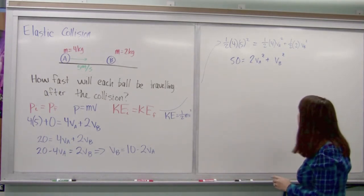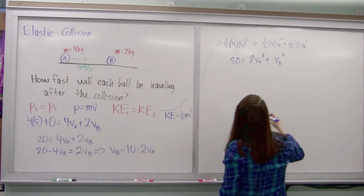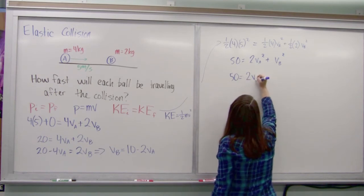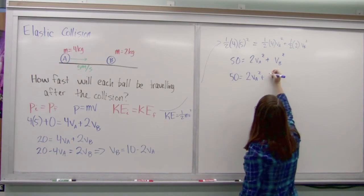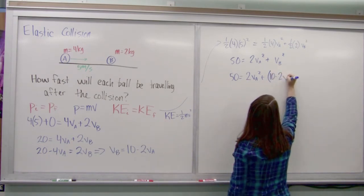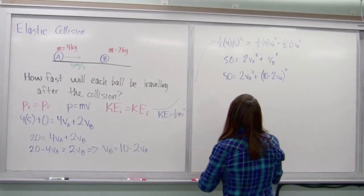Right off, I can't really solve this, but I do know that VB is equal to 10 minus 2 VA. So I can plug that in. I'm going to sub in 10 minus 2 VA. That gets squared. Okay, let's boil this out a little bit.